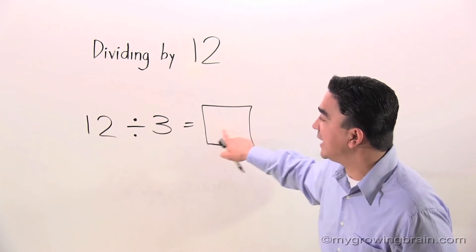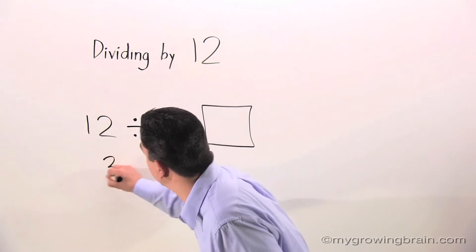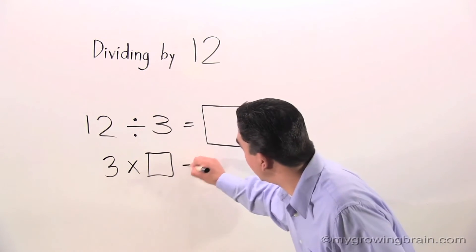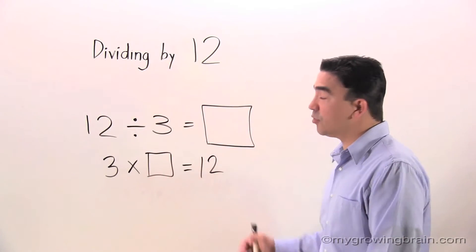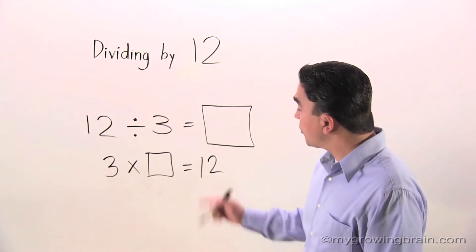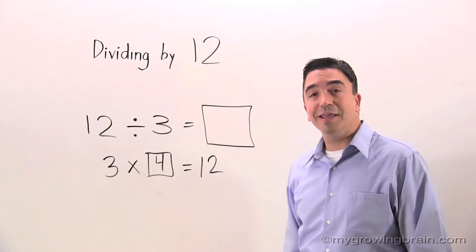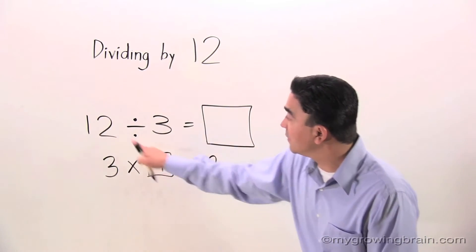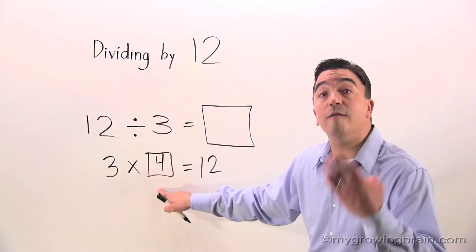3 times blank equals 12. I'm going to go ahead and write it. 3 times blank equals 12. Now, I know this from memorization. 3 times 4 equals 12. Let's see. 12 divided by 3 equals 4.